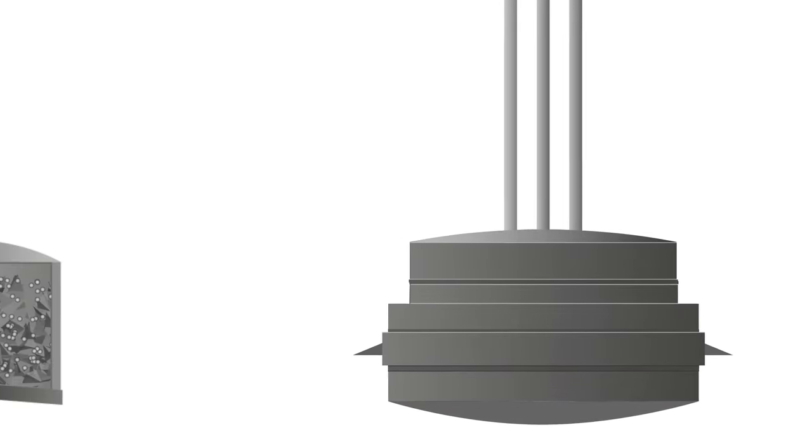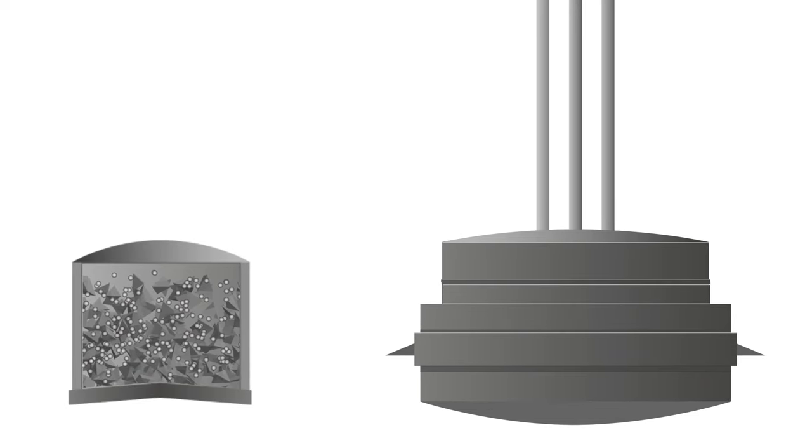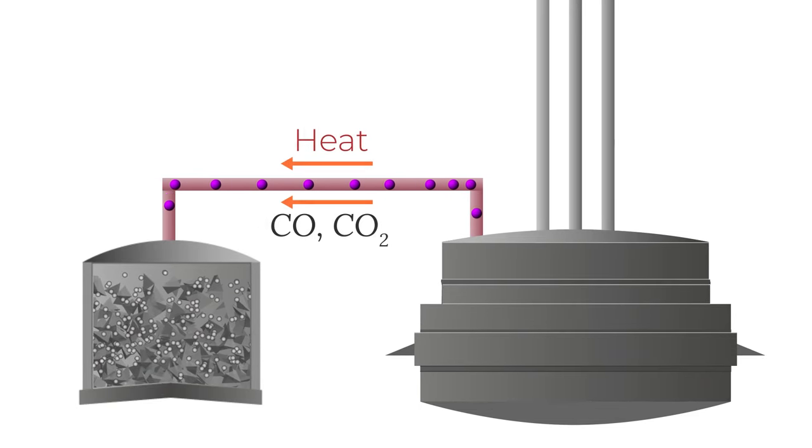Evolved gases, mainly carbon monoxide and carbon dioxide, as well as dust particulates, are extracted throughout the process. The associated heat is used for preheating the next charge of scrap and direct reduced iron.